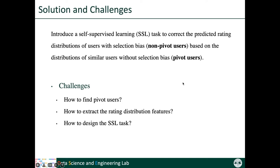To achieve this, we need to address three challenges: first, how to find the pivot users; second, how to extract the rating distribution features; and third, how to design the SSL task. Next, I will elaborate on how we address these challenges.